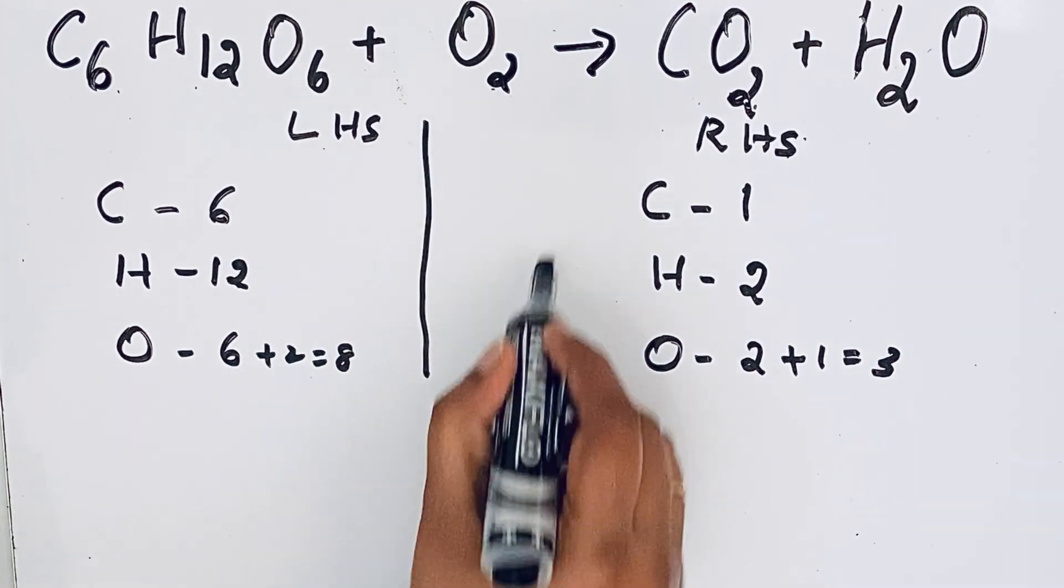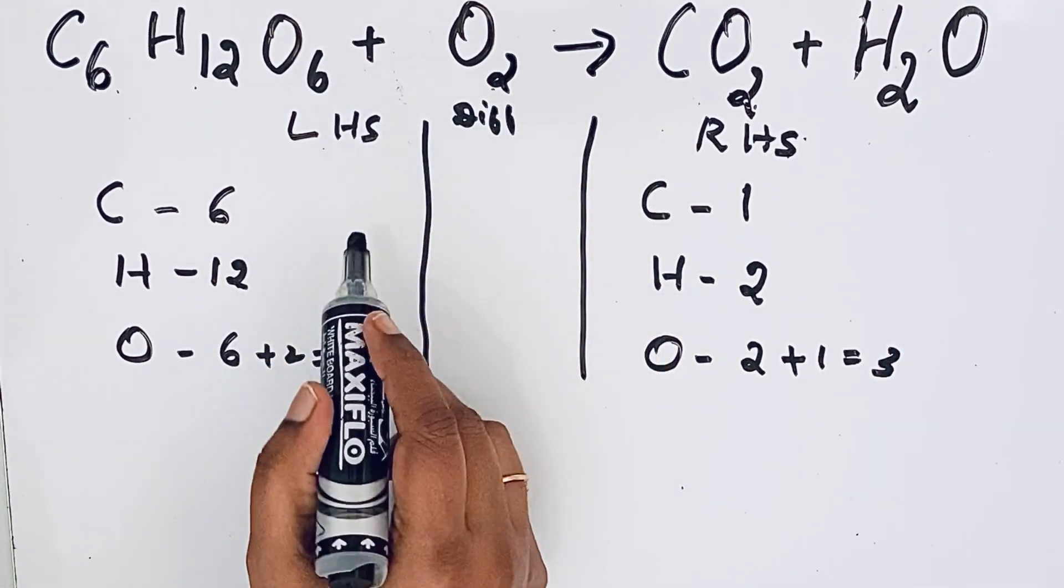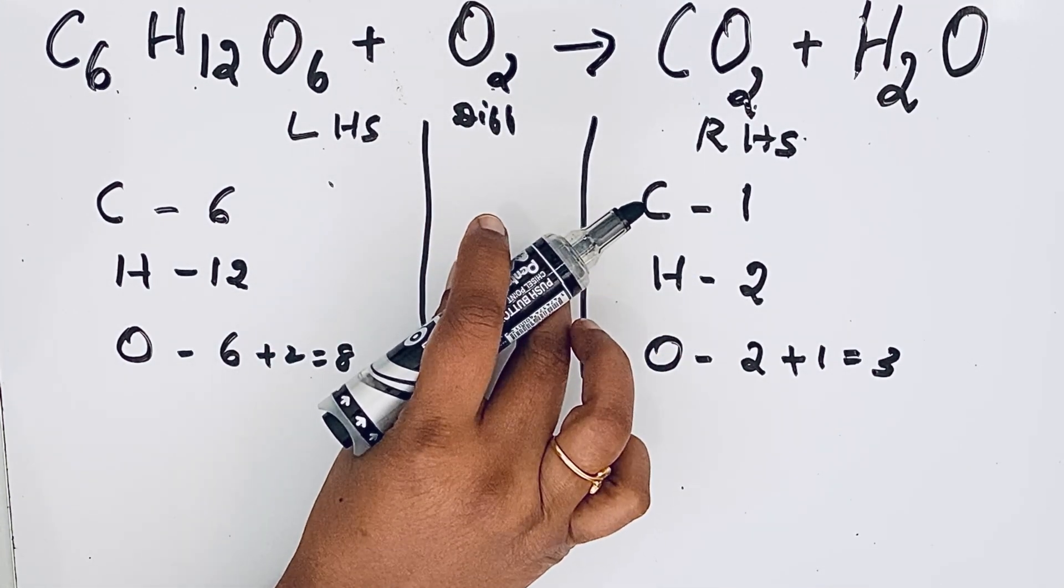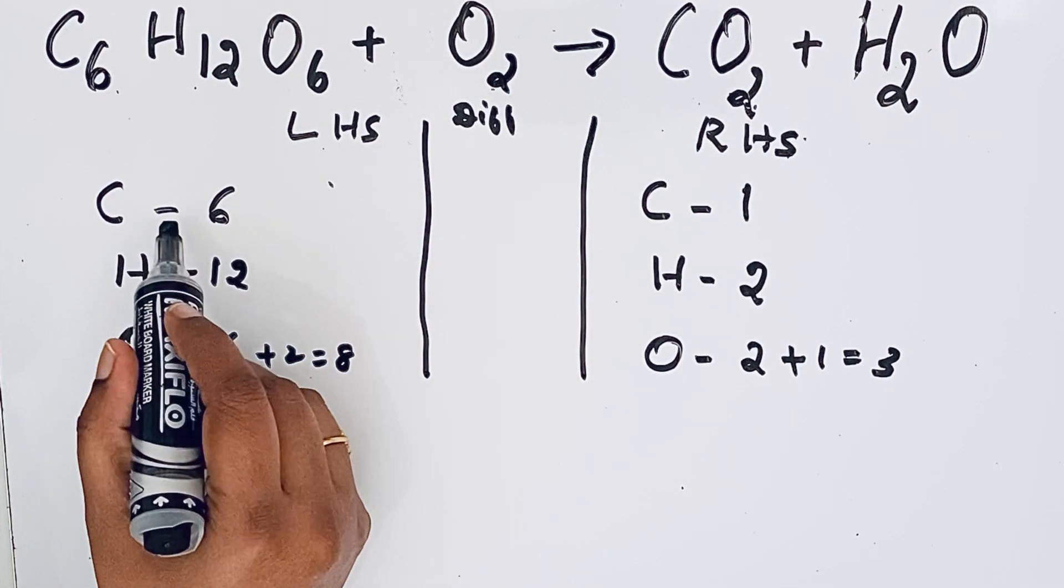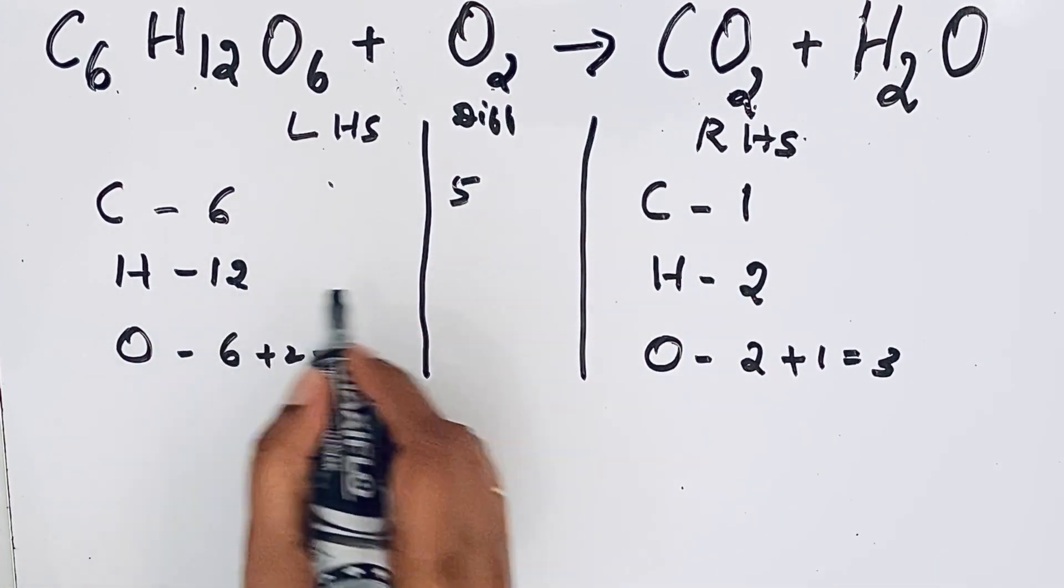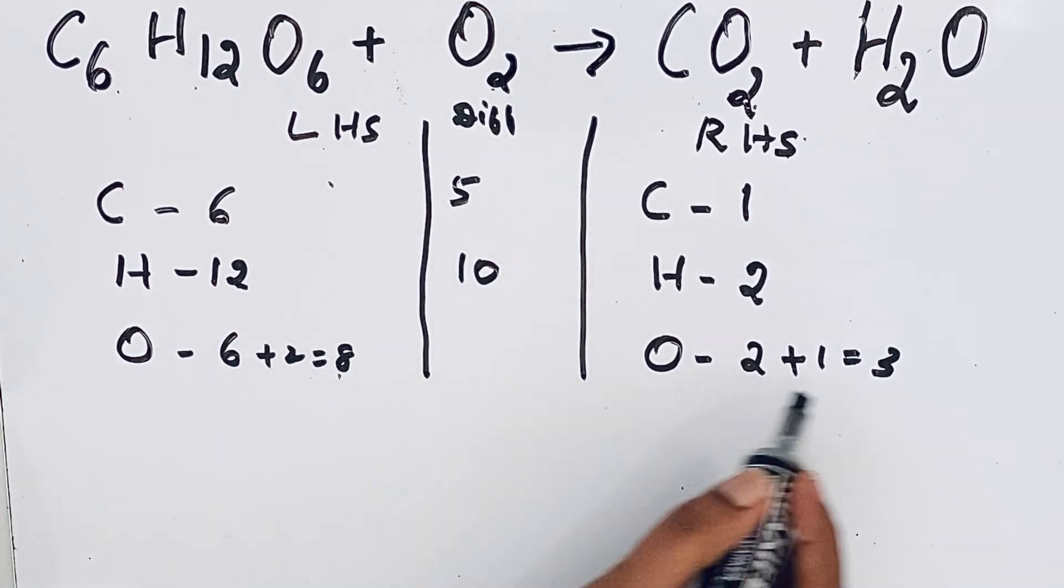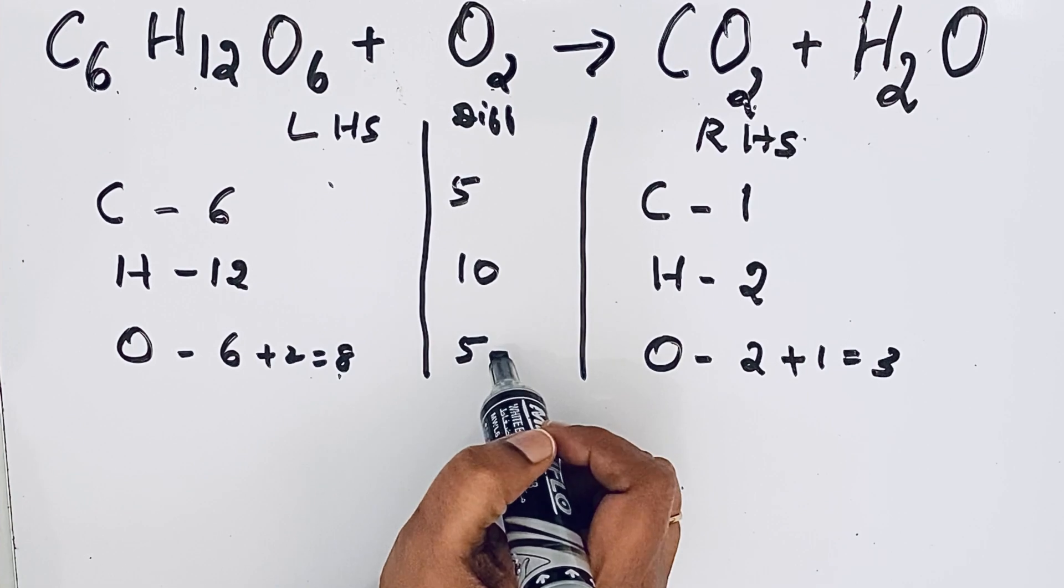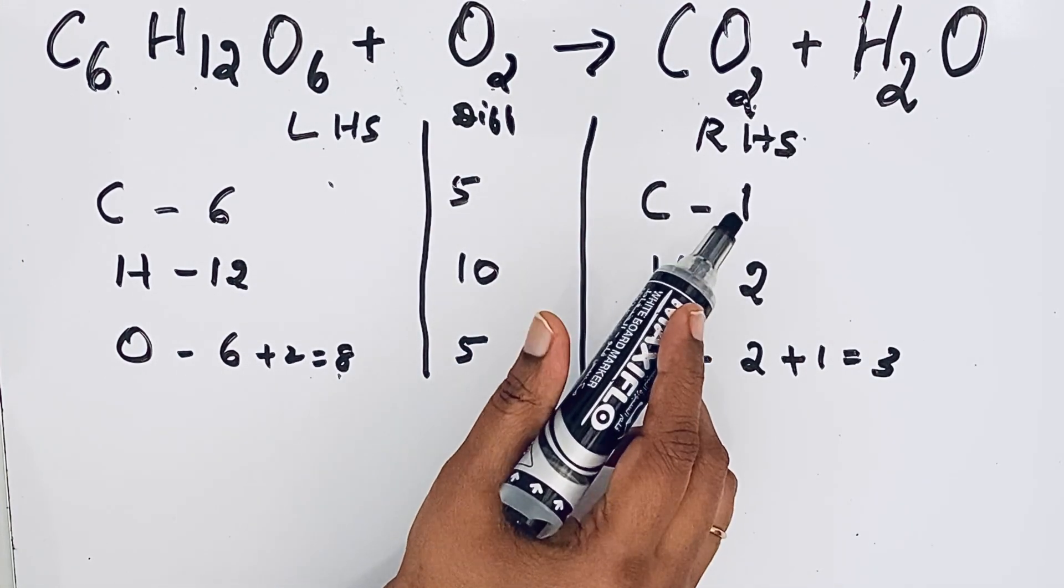Now we are going to draw a column between left hand side and right hand side and write the difference between left hand side atoms and right hand side atoms. If you maintain this column, this definitely will help you to solve the balancing equation very easily and correctly. For carbon, here 6 and here 1, so 6 minus 1, 5. Same way for hydrogen, 12 minus 2, 10. For oxygen, 8 minus 3, that's 5. If it is 0, the atom is balanced. If it is not 0 in the difference column, then we need to multiply with a suitable number until we get that atom balanced.